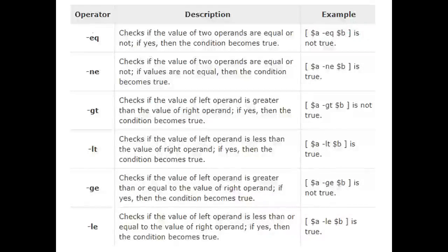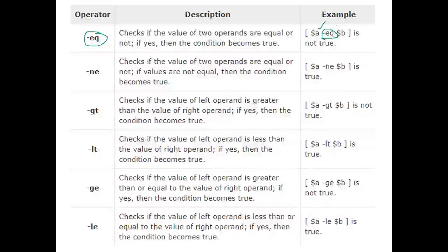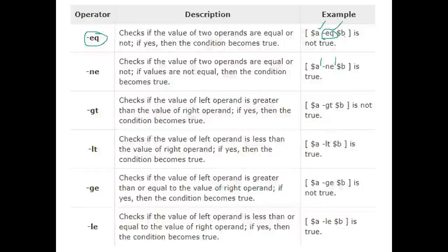To compare values in Unix/Linux programming, the equality operator is hyphen-eq (-eq). When using the operators, there must be a space between the variables and the operator. If you don't put a space, it gives an error. Dollar-a -eq dollar-b returns true if both are equal.